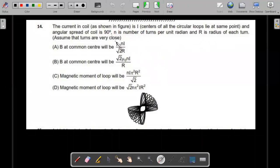He is asking two questions: one is the magnetic field due to this coil at the common center that is the origin, and also the magnetic moment of the loop. He has given four options out of which you have to mark one or more than one that may be correct.